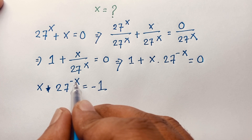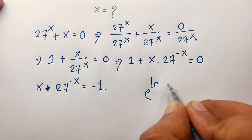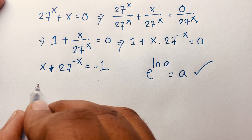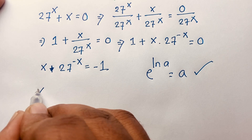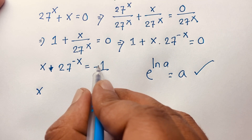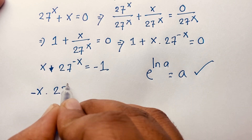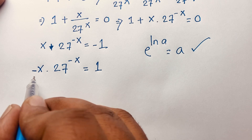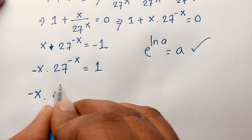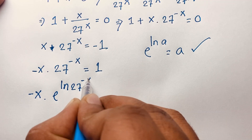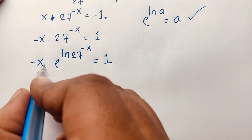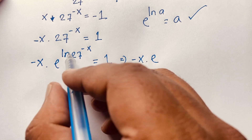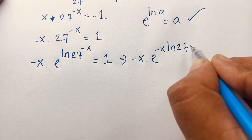I want to use the Lambert W function. Using the identity e^(ln a) = a, I can write 27^(-x) as e^(ln 27^(-x)) = e^(-x·ln27). So moving the negative sign, negative x · 27^(-x) = 1 becomes -x · e^(-x·ln27) = 1.